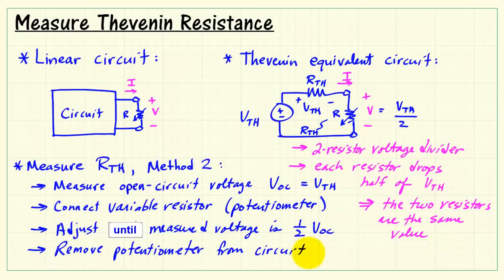Remove the potentiometer from the circuit and measure its resistance with the DMM configured as an ohmmeter. This measured value is the Thevenin resistance.